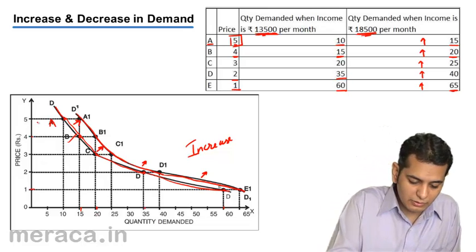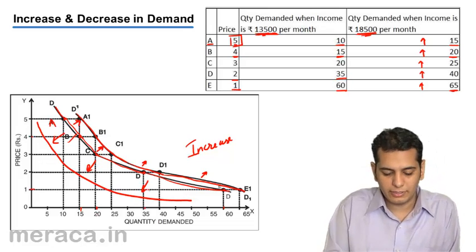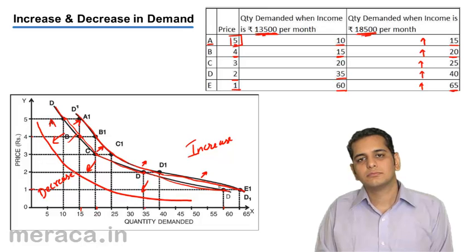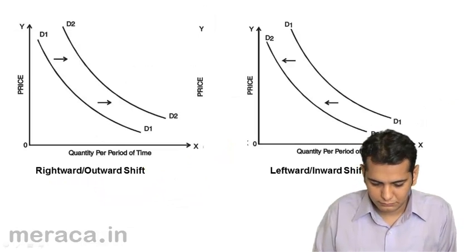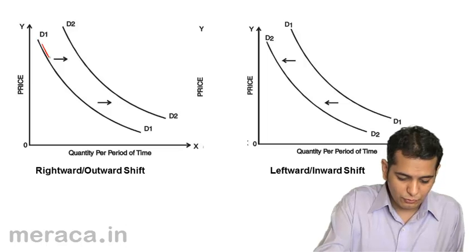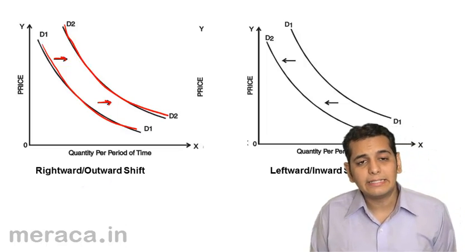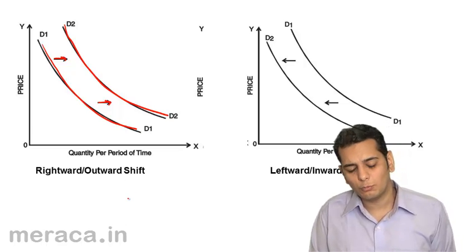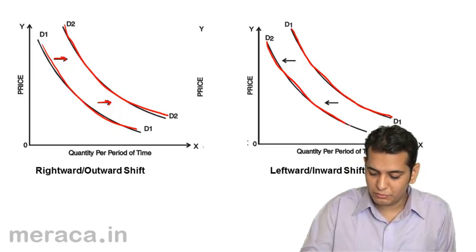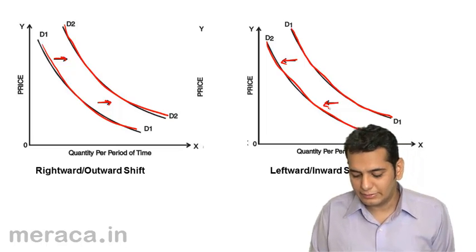However, if the demand curve would have shifted inwards or leftwards, we would call it a decrease in demand. This is the original demand curve. When it moves outwards, this is the new demand curve. When the demand curve shifts inwards or leftwards, this is a decrease in demand.